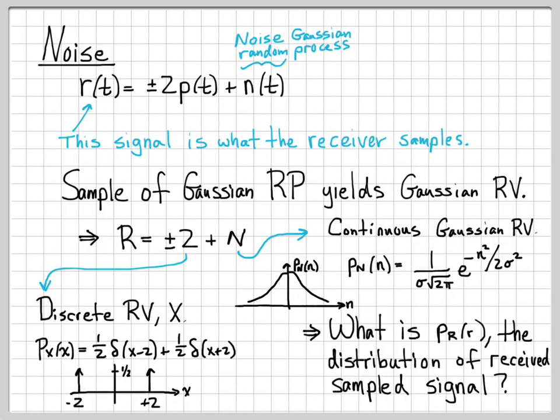What we're interested in is determining the distribution of the received sampled signal R. Given that X is a discrete random variable with that distribution, and N is a continuous Gaussian random variable, we're adding these two things together to get the new random variable R. That value of R is what our receiver analyzes and makes a decision based on. So the big question is: what is the distribution or density function of R?